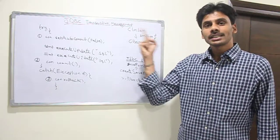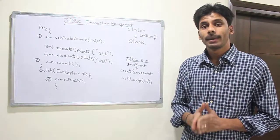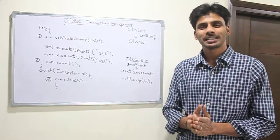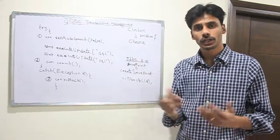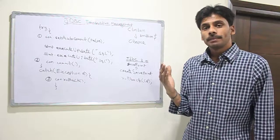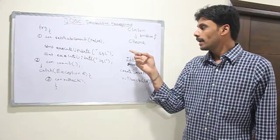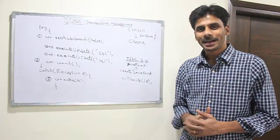Now if the first update statement which deducts from the account executes successfully, but the second statement fails for whatever reason—either the SQL syntax of updating Obama's account is wrong or the database crashed—in that case, the amount will not be credited to Obama's account, which will obviously make both of them unhappy.